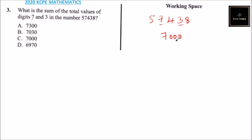The sum of the total values of digits 7 and 3 is 7030.